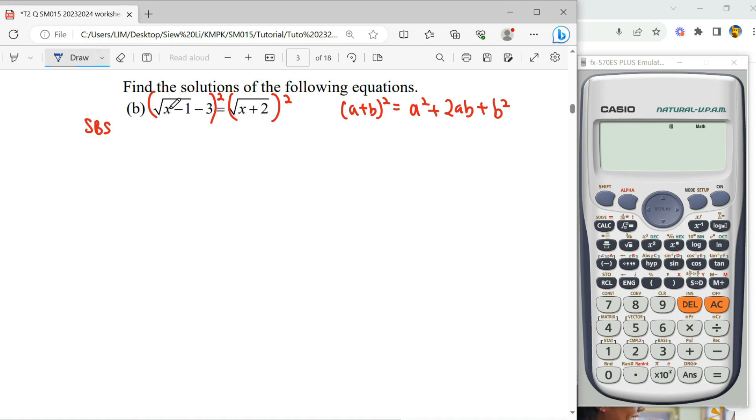Expand for this A square, so X minus 1 square, after B square we get X minus 1 only, and then 2 times third times 3, so it can become negative 6 times third. Then this B square, negative 3 square, we get positive 9.